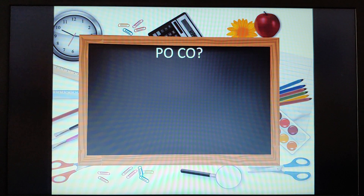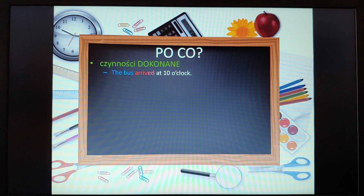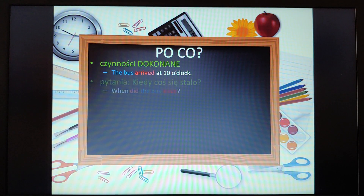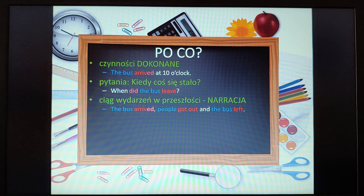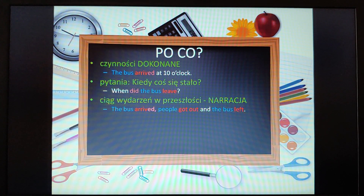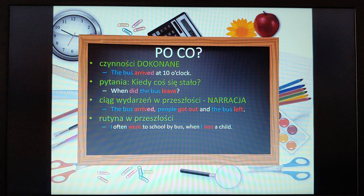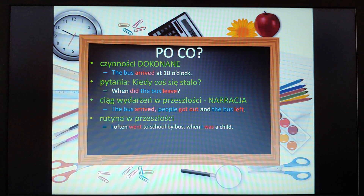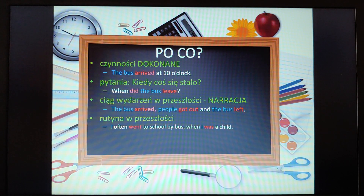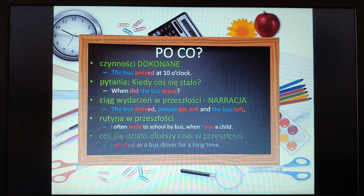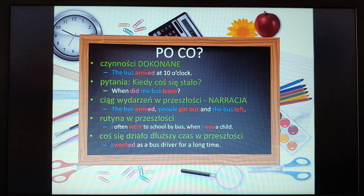Let's repeat. Why do we need past simple? In which situations? Remember that this tense is needed for completed actions in the past. We use it for questions about when something happened in the past, when we tell someone a story or narrate a sequence of past events, when we talk about past routines — something someone did regularly, often, rarely, never, or always — but no longer does now. Also when something happened over a longer period in the past, we use past simple.